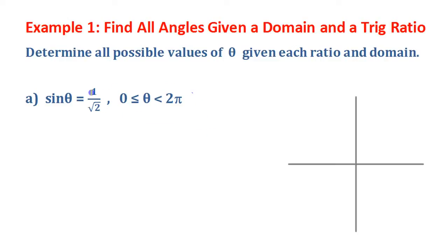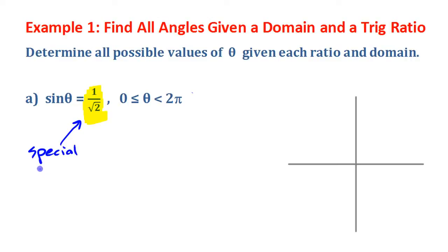When you're looking for something and you're given a ratio, you should try to see if it looks like something you recognize. That is one of those special ratios from a special triangle, so we can use exact values and won't even need to touch our calculator.